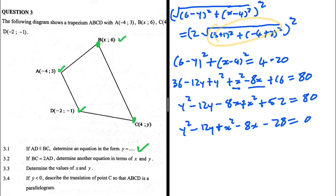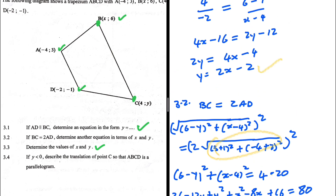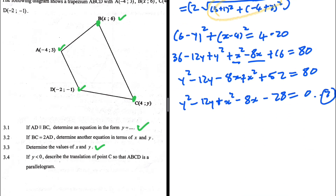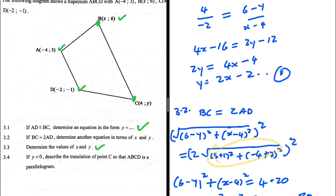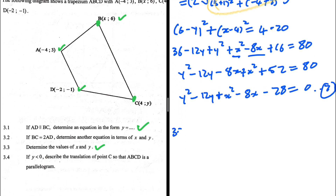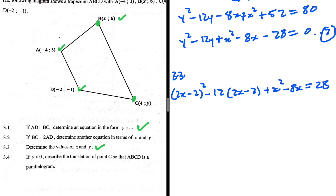For 3.3, we need to determine the values of x and y. We have two equations: equation 1 is y = 2x − 2, and equation 2 is x² + y² − 12y − 8x − 28 = 0. Substituting equation 1 into equation 2, we replace y with (2x − 2), and take −28 to the right-hand side, giving 28.